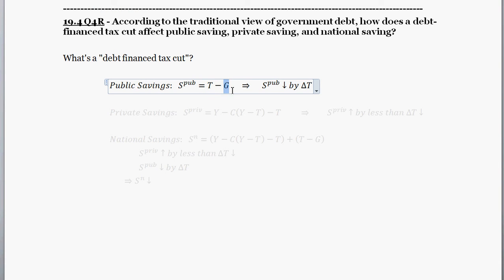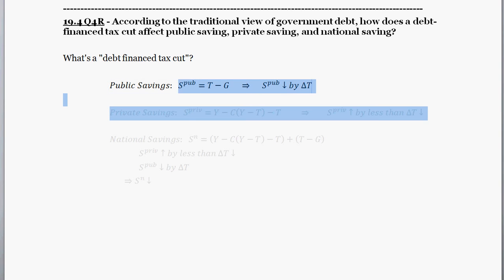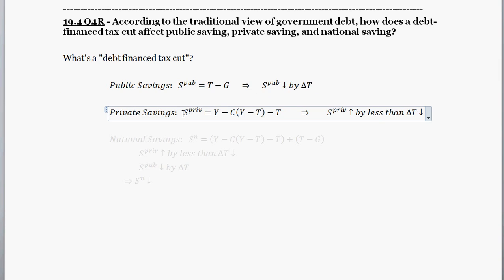Public savings is just the difference between taxes and government spending. If taxes decrease and government spending doesn't have any corresponding change, then public savings is going to decrease by exactly the amount of the change in taxes. So if taxes go down by $100 million, then public savings decreases by $100 million. Next up is private savings.